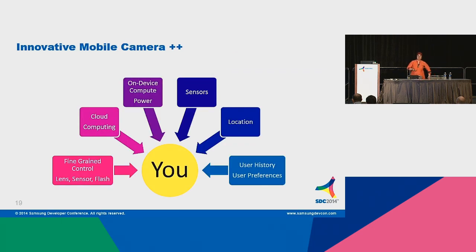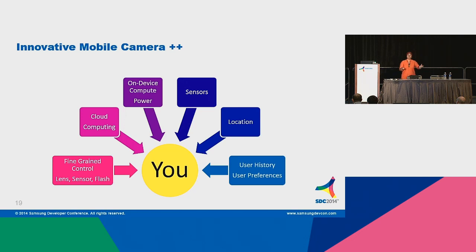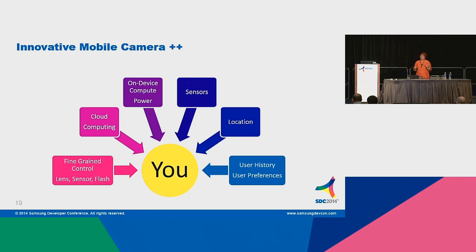The innovative mobile camera plus plus: besides the fine-grained control, this device compared to a traditional DSLR has access to the cloud, access to proximity, and a rich set of sensors. It knows your location, your calendar, your history, and what event is coming up next. So if you're going to your daughter's soccer game and it's raining outside, it would probably know that the flash needs to be on and it needs to be in a sports mode or burst mode so you can capture your perfect shot — smarter than before.